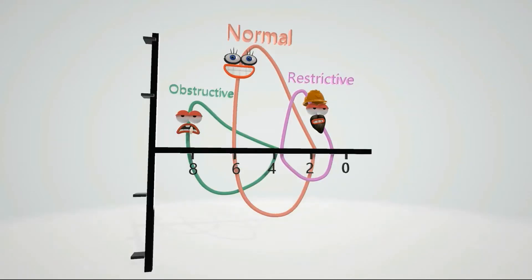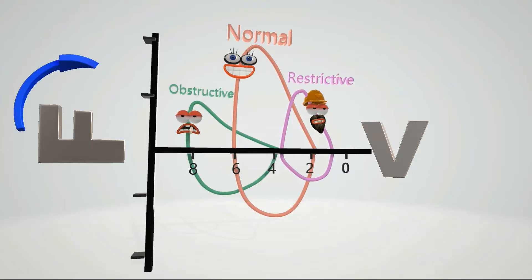Just to explain what's going on in this curve, on the x-axis we have volume of air in liters, and on the y-axis we have flow of air in liters per second. On top of the curve is expiration, and on the bottom is inspiration.